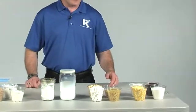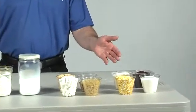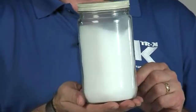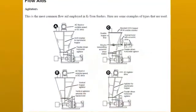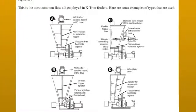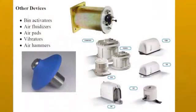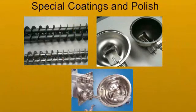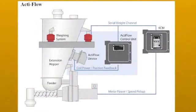Tom categorizes many bulk solids properties to help you select the proper feeder for your application. To avoid common flow problems and enhance the accuracy of your feeder, we examined various types of flow aids such as agitation, vibration, and coatings that can be employed to enhance flow through the feeder.